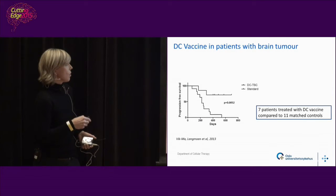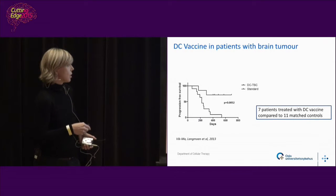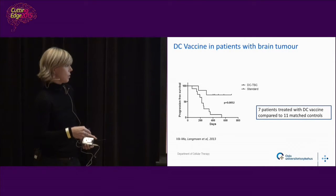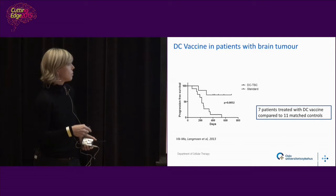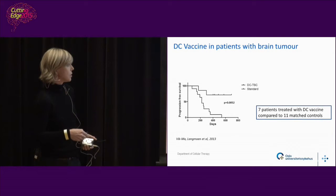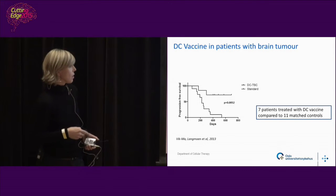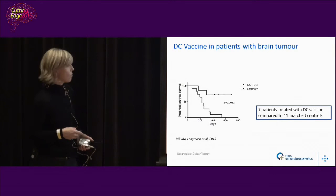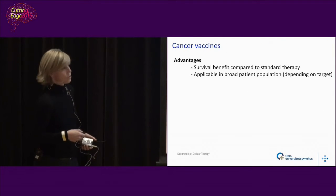You can see the progression-free survival of one group treated with dendritic cell vaccine for brain tumor compared to one group with standard therapy. This is now being taken further to randomized clinical studies.